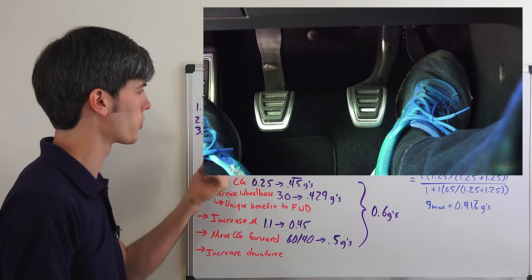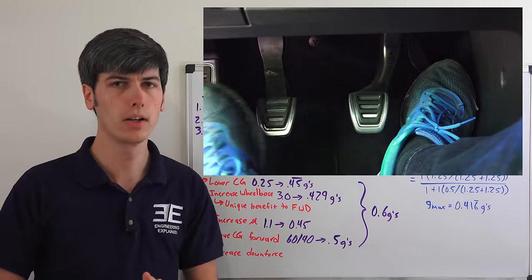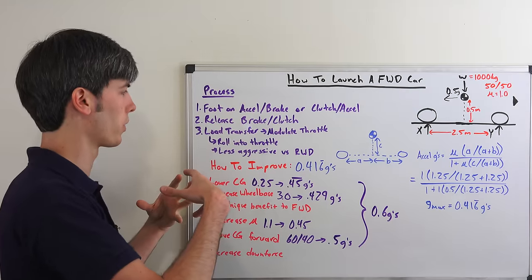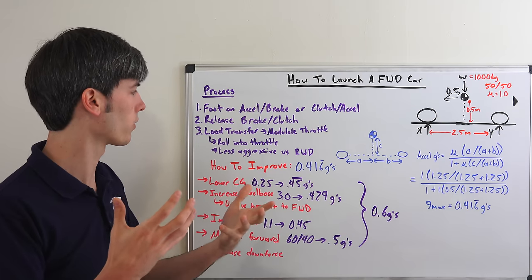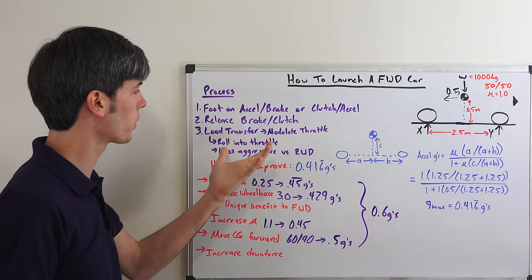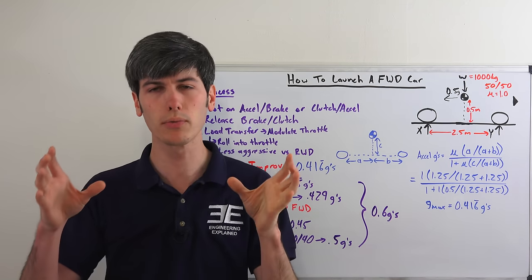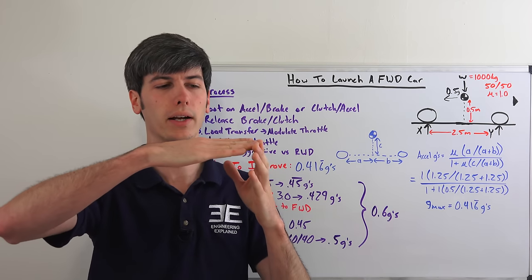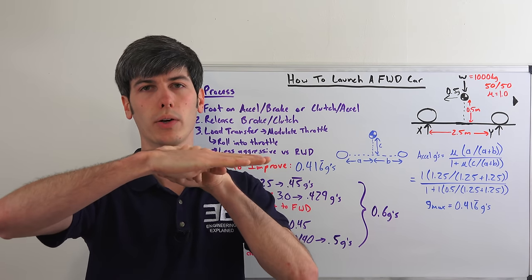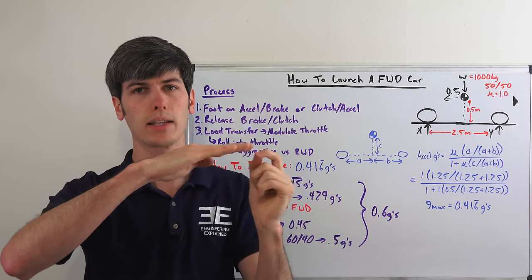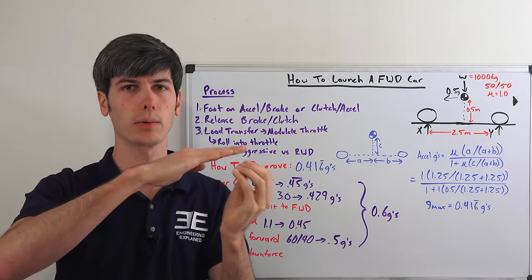Now the important part here is load transfer and modulating the throttle as you have load transfer to the rear tires rather than the front because we're accelerating with those front tires. So with the front-wheel drive car as you're accelerating, you're transferring load to those rear tires, which means as you accelerate the maximum rate at which you can accelerate decreases because the front tires have less weight on them.